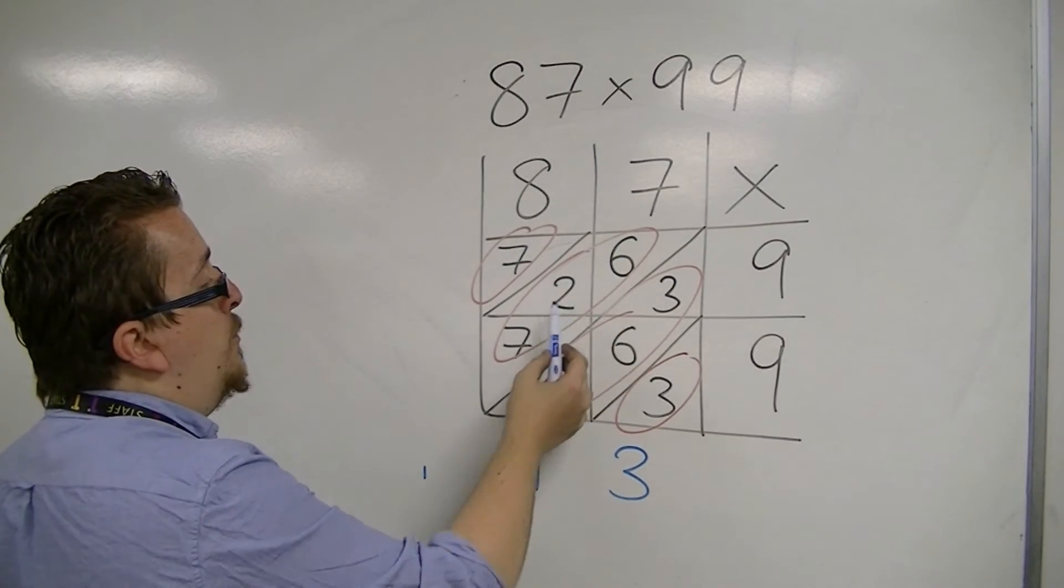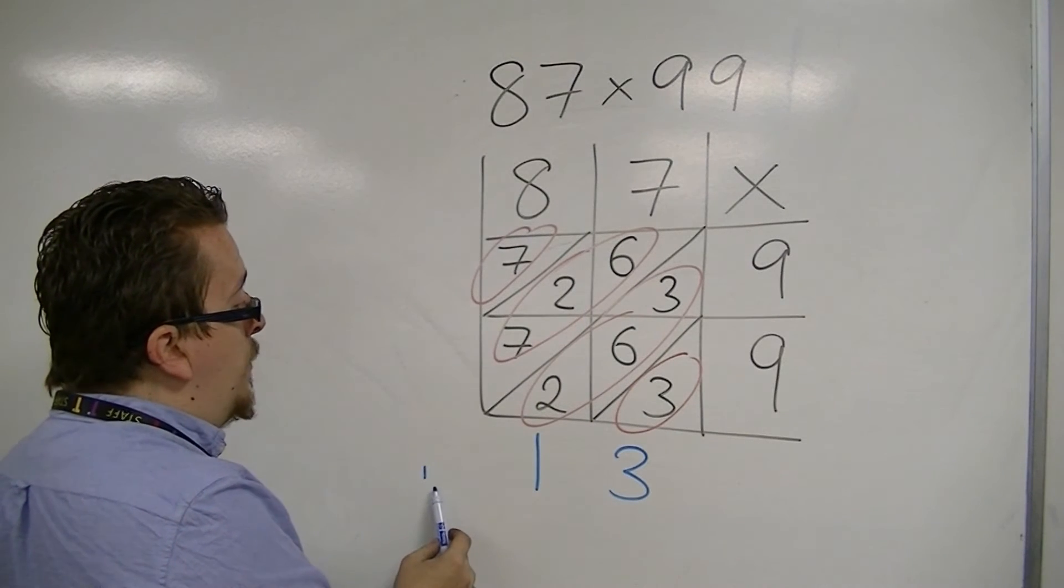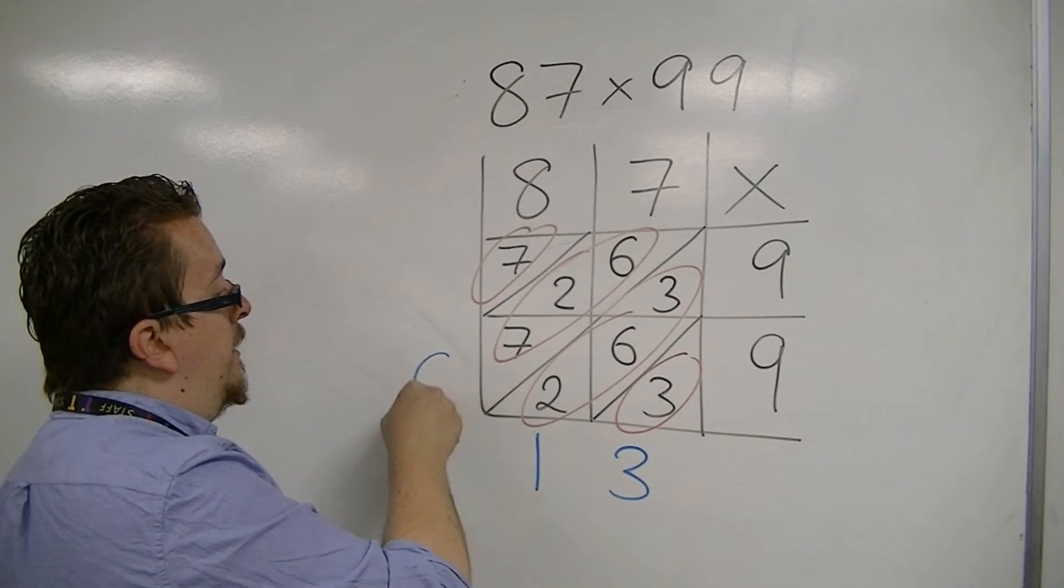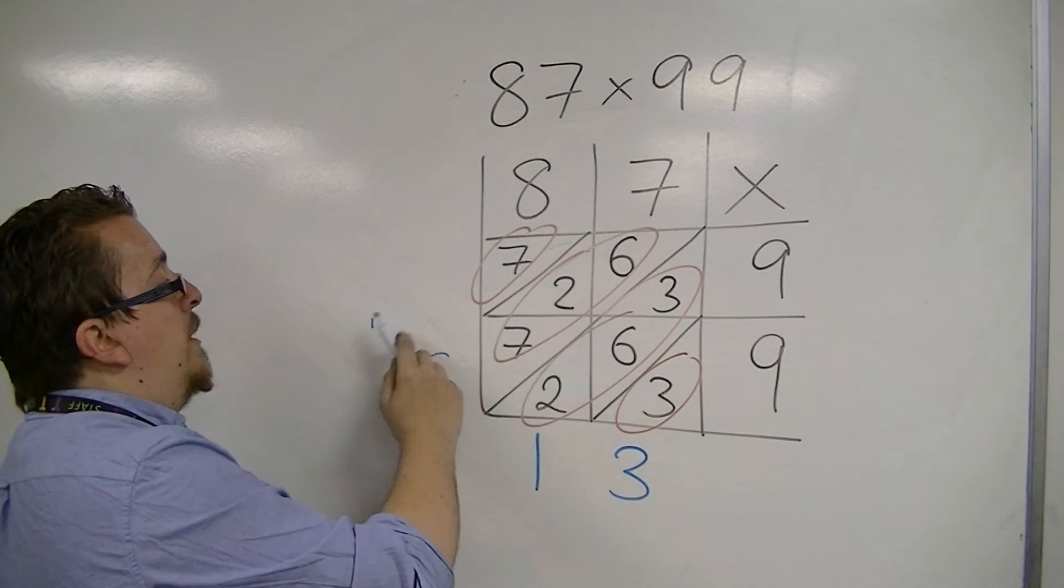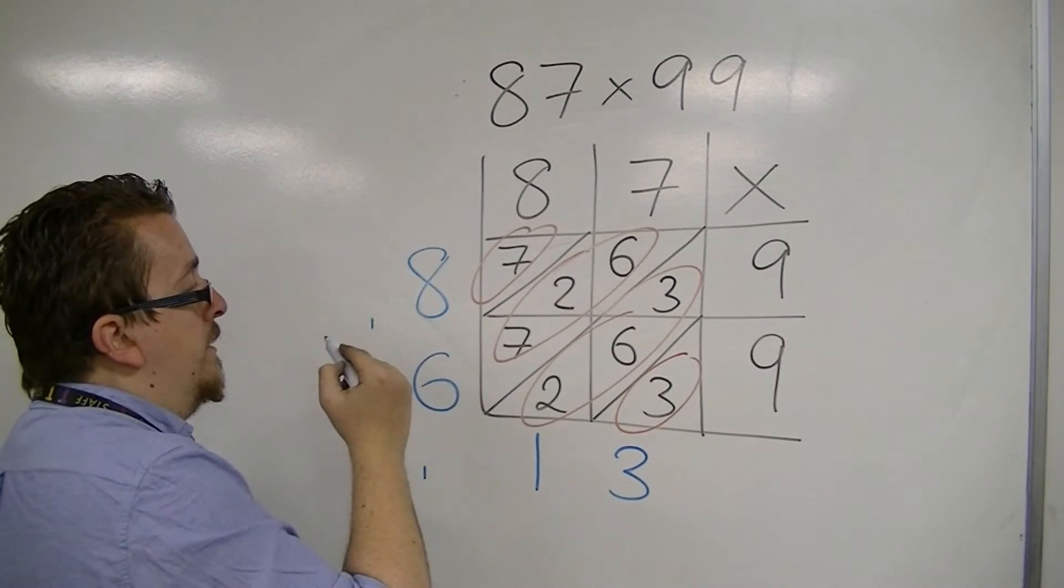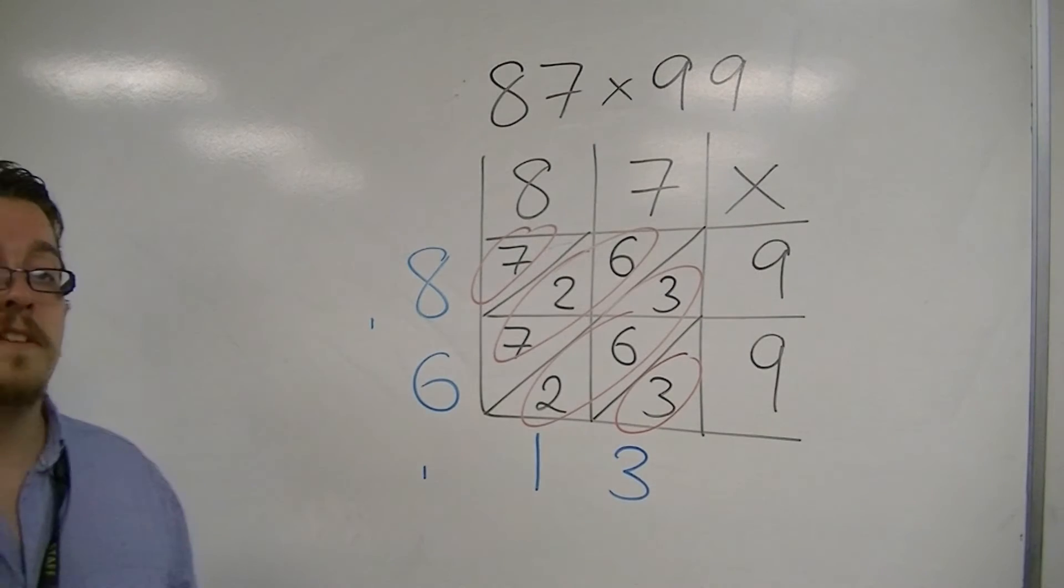Then we have 6 plus 2 plus 7 is 15. Add that 1 that we have left over, it's 16. So, we write 6 and carry the 1. Then 7 plus that 1 will make 8. So, the final answer is 8, 6, 1, 3.